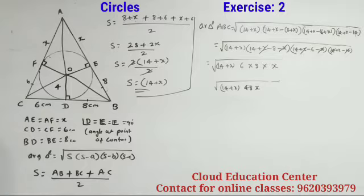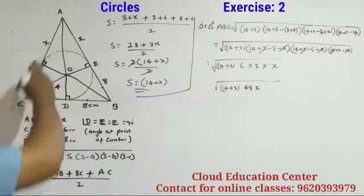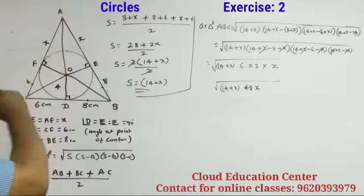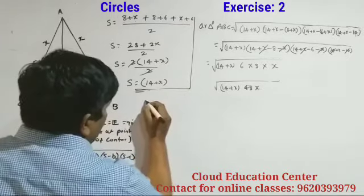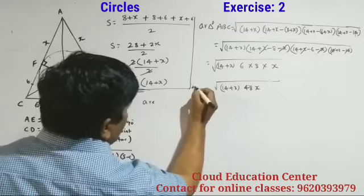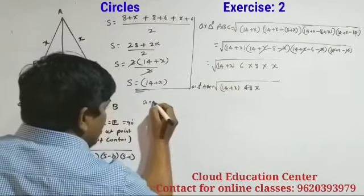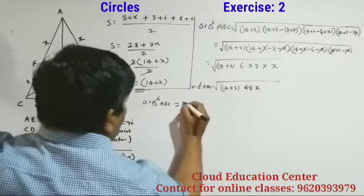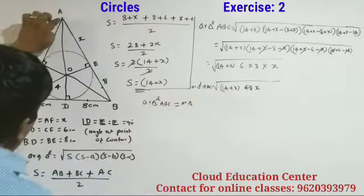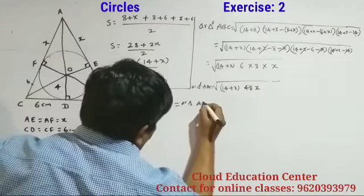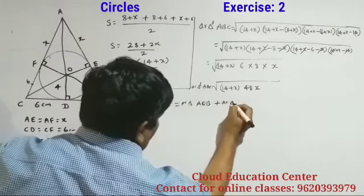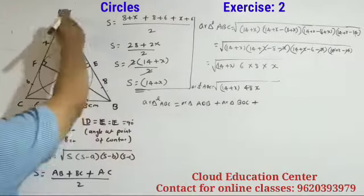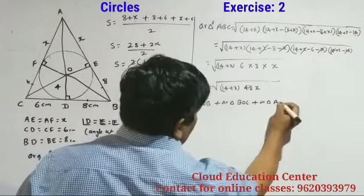Similarly, we can find the area of triangle ABC by adding the areas of triangles AOB, BOC, and AOC. That is, area of triangle ABC equals area of triangle AOB plus area of triangle BOC plus area of triangle AOC.